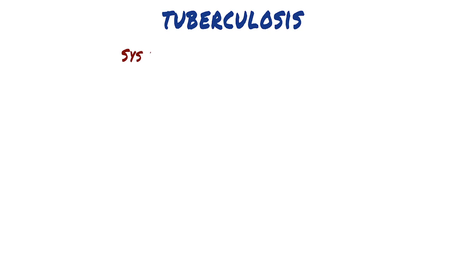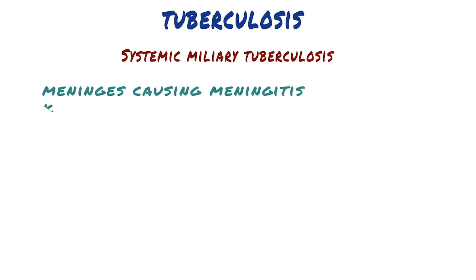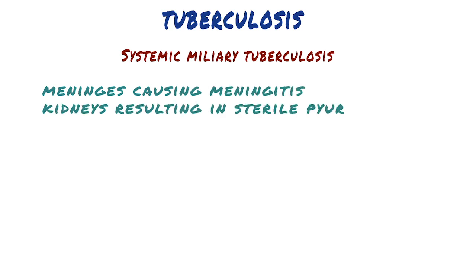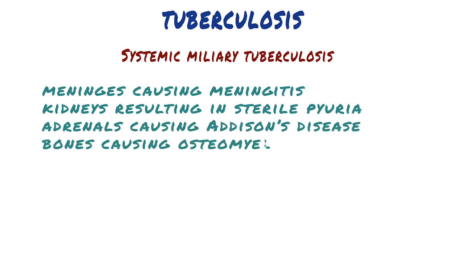Systemic miliary tuberculosis occurs when bacteria disseminate through the systemic arterial system. Organs that are commonly involved include the meninges, causing meningitis; the kidneys, resulting in sterile pyuria; the adrenals, causing Addison's disease; and the bones, causing osteomyelitis.